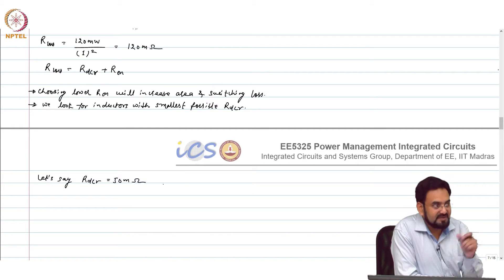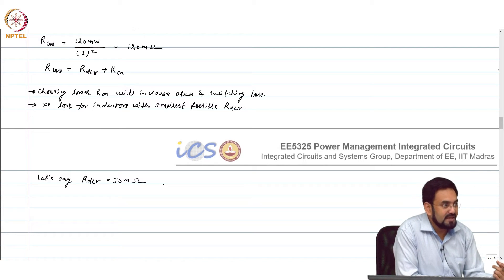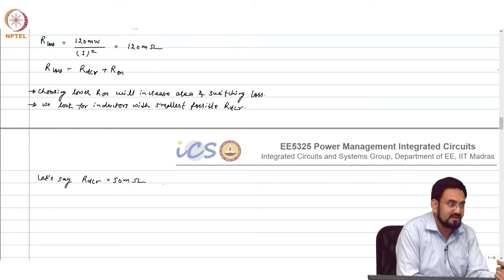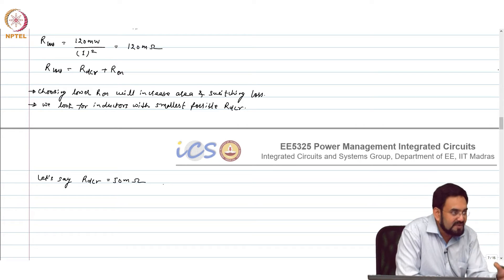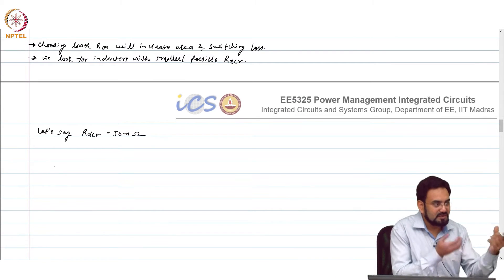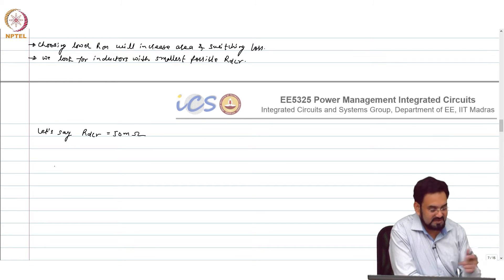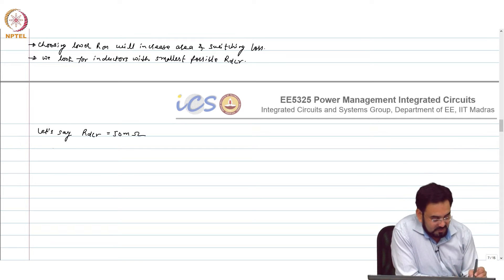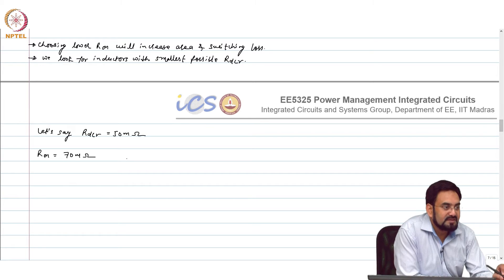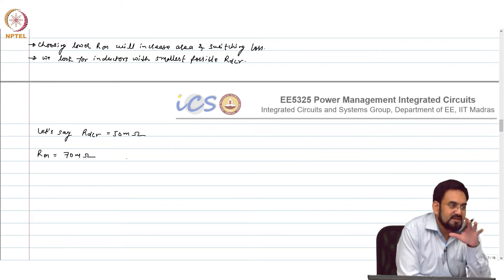So you will find the inductors in different ways. When you are talking of 1 amp kind of current then you can easily find in 2 millimeter by 2 millimeter like or 2010 kind of 2mm by 1mm kind of package. So the size will be quite comparable to your capacitor, like tens of microfarad kind of caps. So now R_on is 70 milliohms.